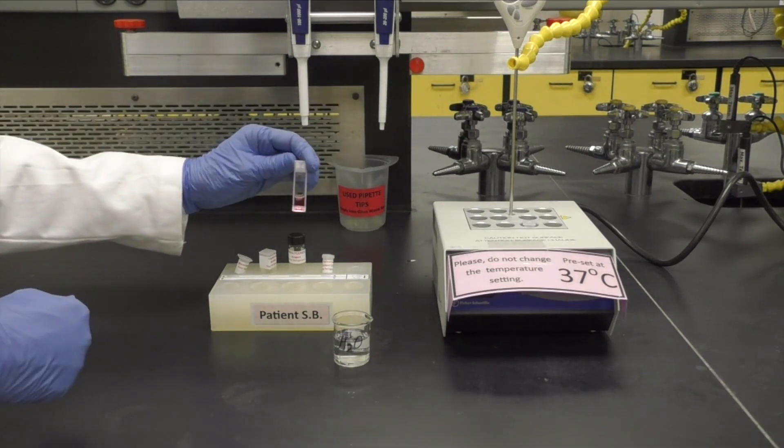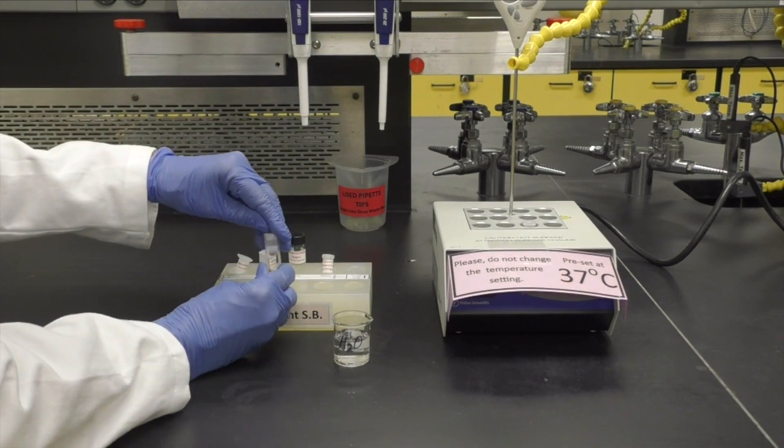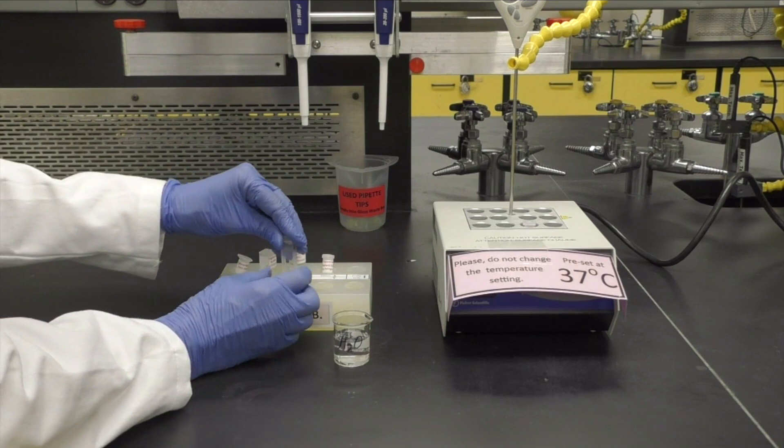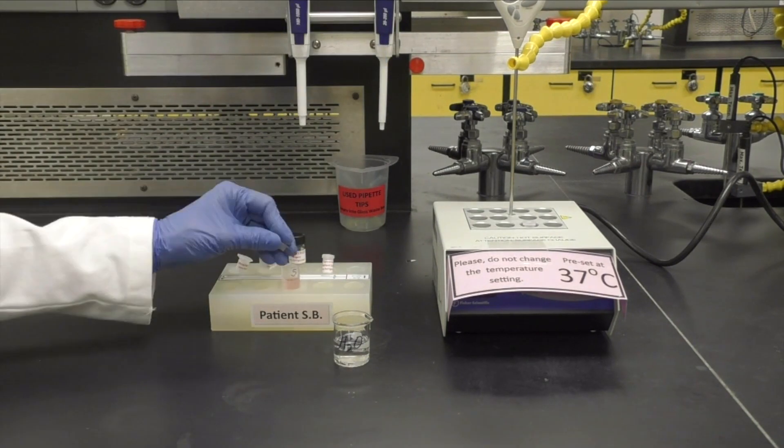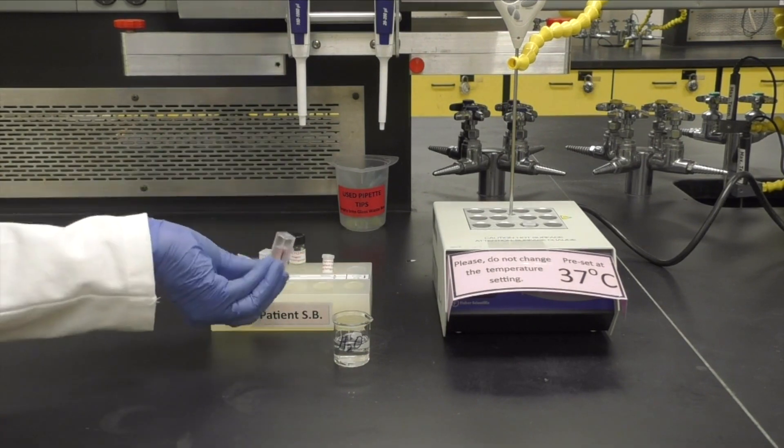Once 10 minutes has elapsed, remove the standard from the dry bath. Uncap it carefully and add 2 milliliters of Nanopure water. Cap it and gently mix by rotating.